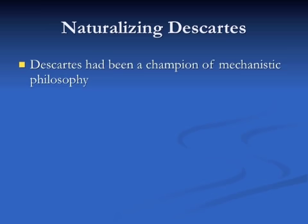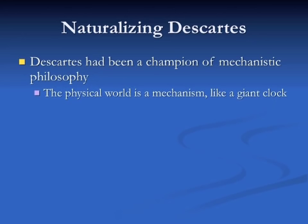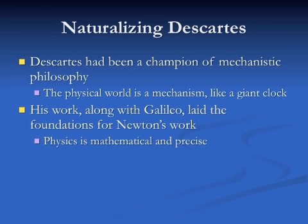Locke can be seen as trying to naturalize Descartes. Descartes had been a champion of mechanistic philosophy — the claim that the physical world is a giant mechanism, like a giant clock. Descartes' work, along with Galileo, laid the foundation for Newton's work. Newton extended and revised Descartes' ideas, mathematized them, and developed calculus as a solution to various problems, allowing mathematically precise physics — differential equations describing the movement of objects — to develop.